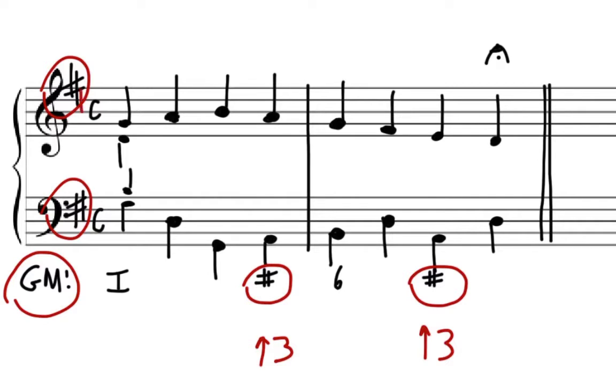So if you would have added C sharp to your key signature, that would indicate the key of D or B minor. So we're going to look for a possible modulation to the key of D or possibly B minor.